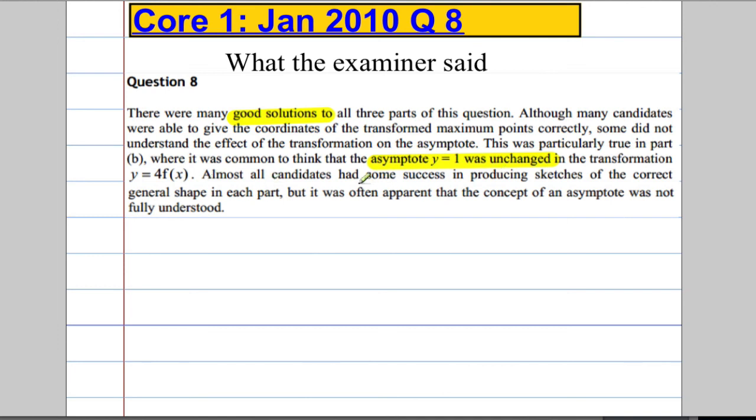Almost all candidates had some success in producing sketches of the correct general shape. The concept of the asymptote is a problem. An asymptote is an imaginary line where the graph or the function is undefined, where it does not have any solutions.